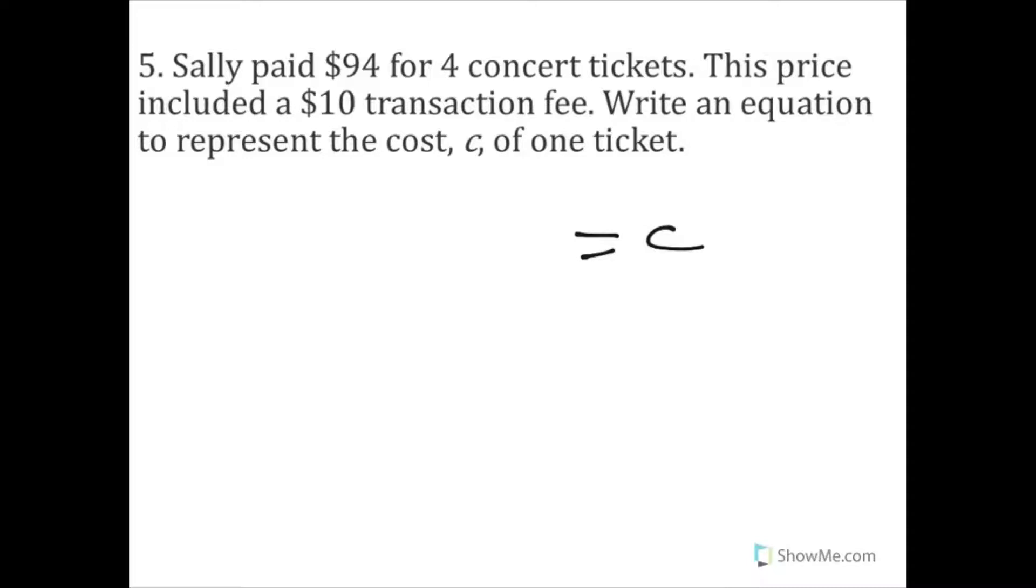Well, check this out. $94 is what she paid, right? $10 of that $94 is the transaction fee. So if we subtracted 10 from 94, that would be how much she paid for four tickets. But if we wanted one ticket, well, we'd have to divide that by four. And that would equal the cost of one ticket. See, we got the $94 is what she paid. $10 she paid in the transaction fee. So that wasn't part of each ticket. That was just the transaction fee. So if we take the transaction fee, that $10 from the 94, that $84 is what she would have paid for all four tickets. So then we're going to take that and divide it by four. But you know what? It didn't ask us to solve it. It just asked us to write an equation. So 94 minus 10 divided by four equals c, the cost of one ticket.